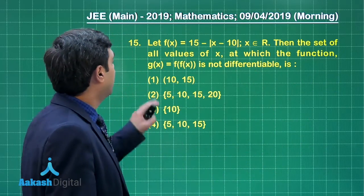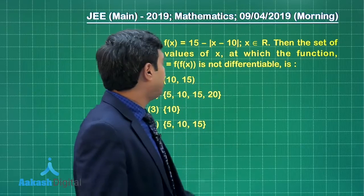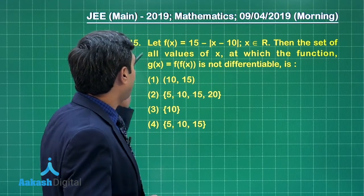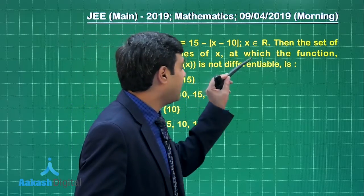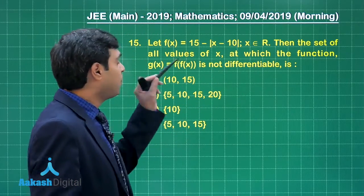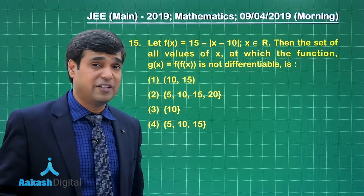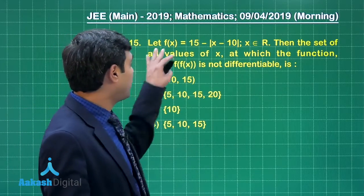Let us move on to question number 15. Let f(x) = 15 - |x - 10|. Then the set of all values of x at which the function g(x) = f(f(x)) is not differentiable.